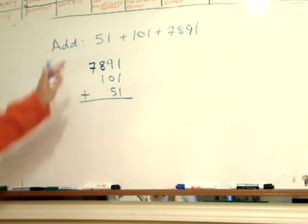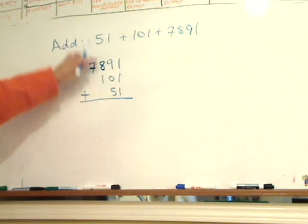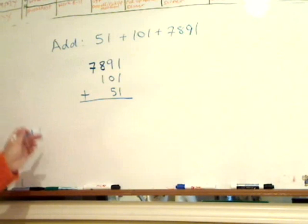You see how it's all lined up in ones, tens, hundreds, and then thousands, so now it's very easy to add up.